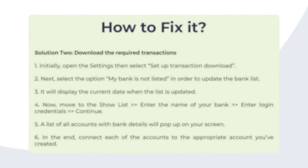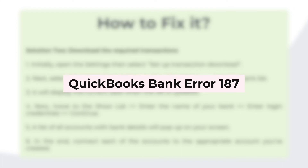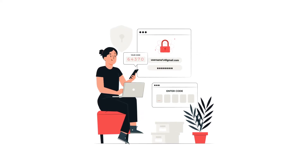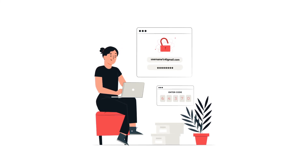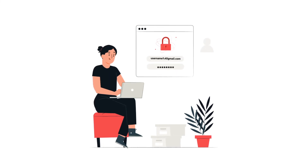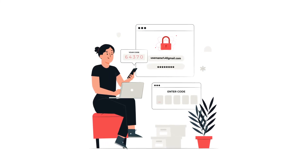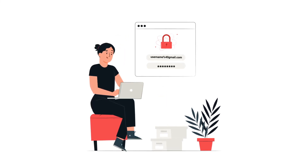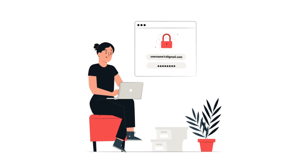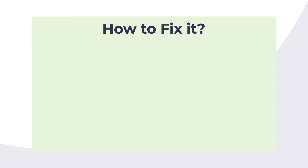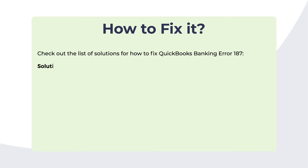Number six: QuickBooks bank error 187. What is it? Error code 187 occurs when the wrong answer was given for the two-factor authentication (2FA) question. The error message usually pops up when users are attempting to import transactions into QuickBooks from their bank, due to improper software uninstalls or missing files accidentally deleted from the Windows registry.